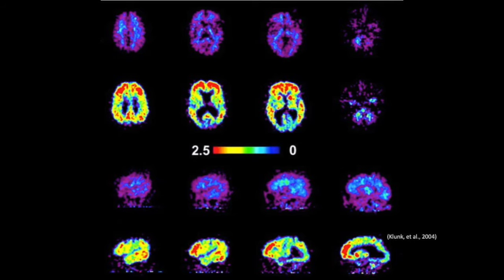This is a brain cross-section that displays the plaques formed by amyloid beta-42. The first and third rows are controls, and the second and fourth rows are of Alzheimer's patients. The bright colors, like red and yellow, indicate a high concentration of plaques in the corresponding region.